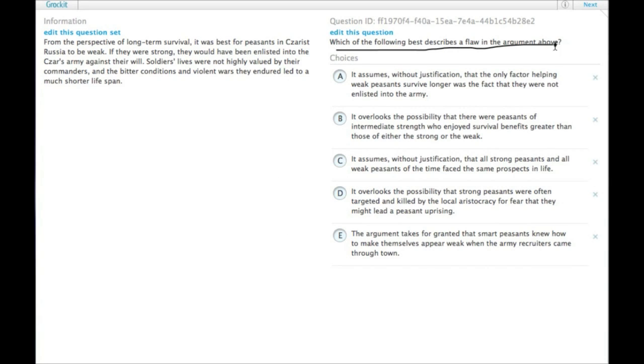Which of the following best describes a flaw in the argument above? The argument is that from the perspective of long-term survival, it was best for peasants in Czarist Russia to be weak. The evidence is that if they were strong, they would have been enlisted into the Czar's army against their will, and soldiers' lives were not valued and they had a much shorter lifespan.